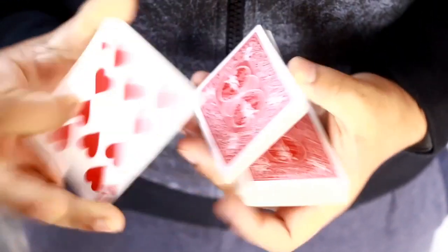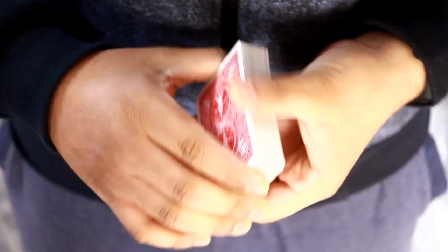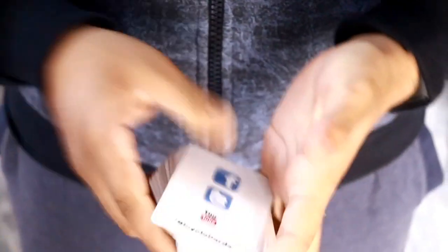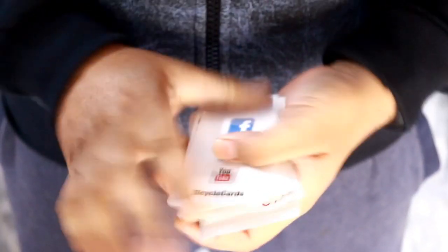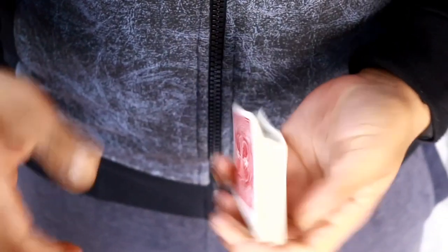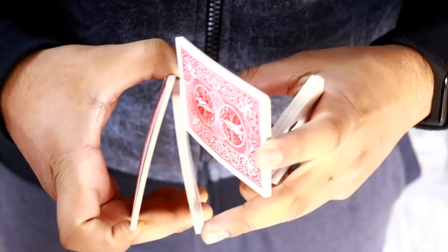This is basically a three packet false cut. If you don't know what false cut means, it basically means that you are cutting the packets like this visually, but at the end after you nail down the move, the order of the deck will remain the same. You can use this type of move even as a magic trick as a spectator misdirection when you split the cards like this and they'll think that the cards are mixed up.